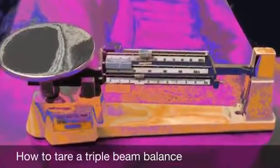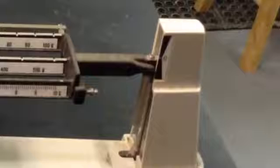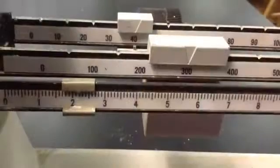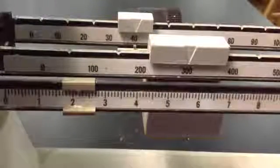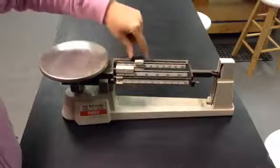How to tare a triple beam balance. This is the pan, this is the zero you want to line the beam up with. These are the three beams and the three riders. Slide all the riders all the way to the left of the beams before you start.